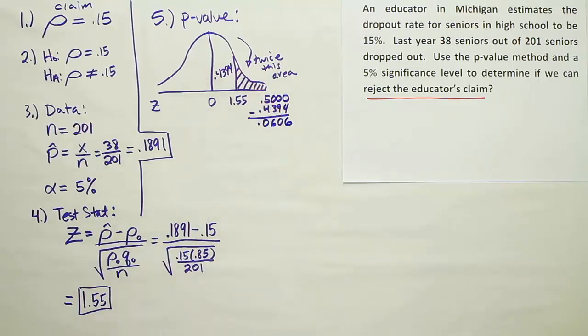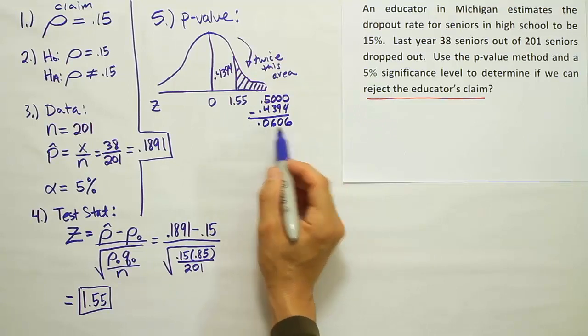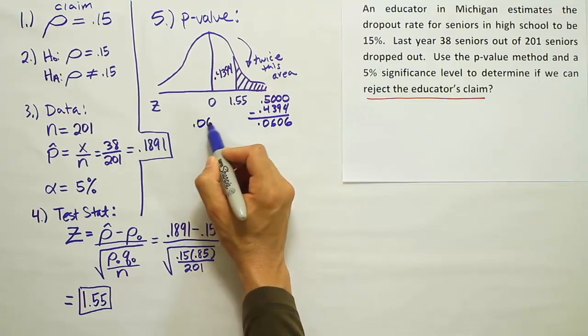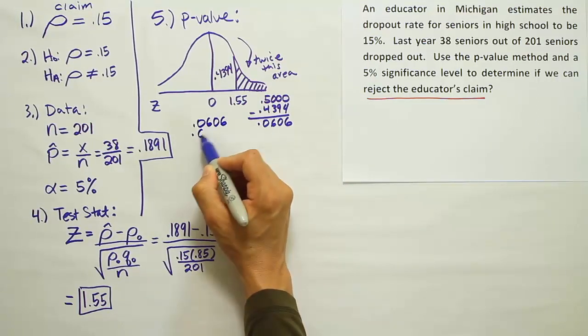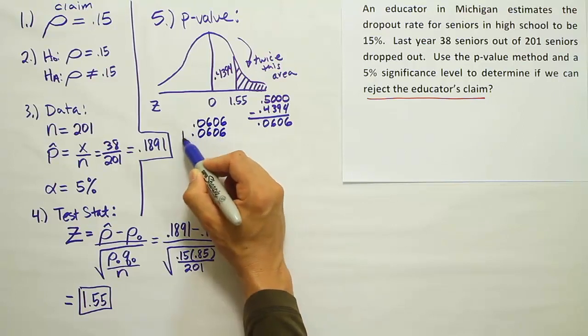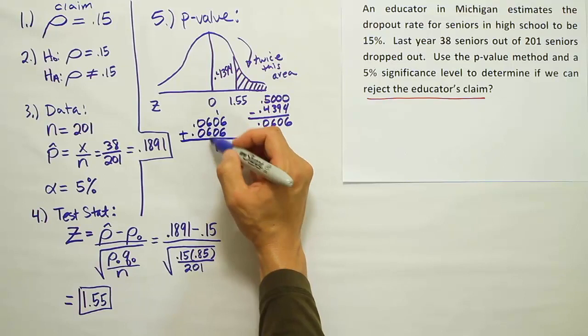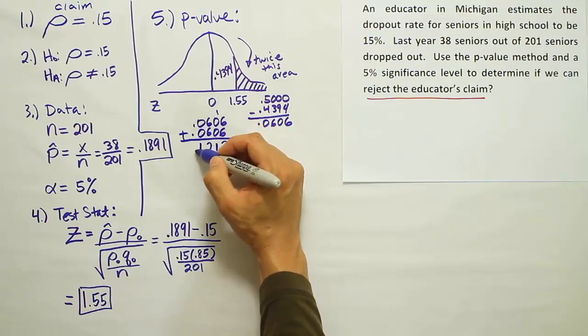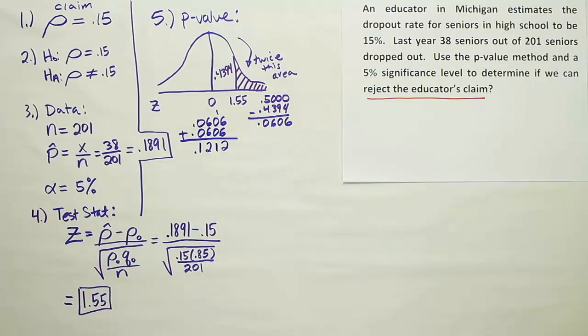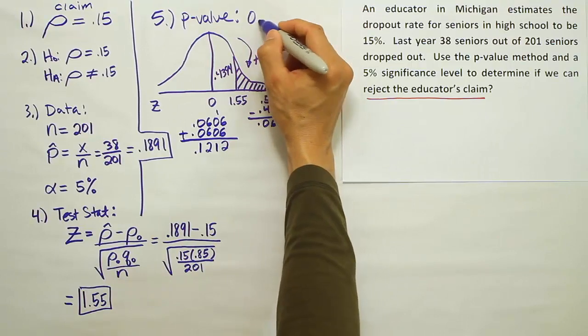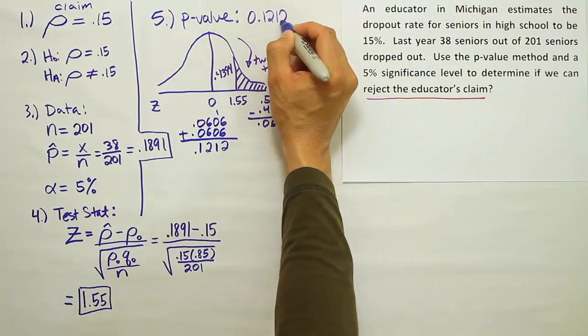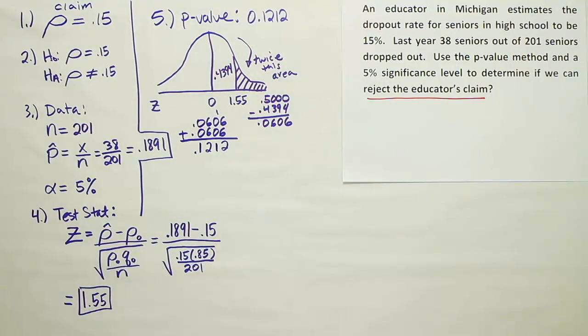Now that's the area in the tail, but we have to do twice that to get our p-value. So let's do this number times 2. So 0.0606 added to 0.0606 is the same as multiplying by 2. So we'll get 12, carry the 1, 12 again, carry the 1, and we end up with 0.1212. So our p-value is 0.1212 or 12.12%.